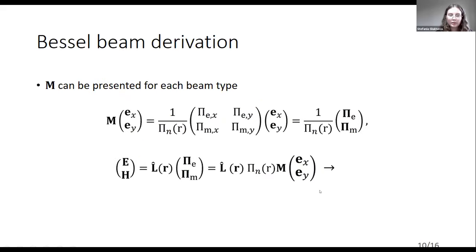On this step, we present the matrix operator M for each Bessel beam type. This operator transforms the polarization vector of the beam into its potential vector, and the previous equation can be written in this compact form.